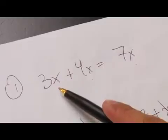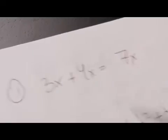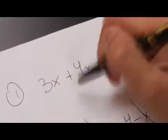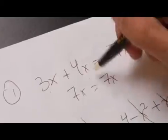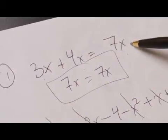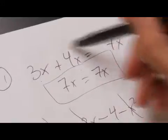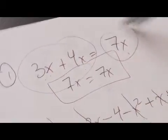Here we have 3x plus 4x which equals 7x. We're able to see that 3x plus 4x is 7x which therefore equals 7x. This means that this equation is true because we have taken these two like terms, 3x plus 4x, to create the 7x.